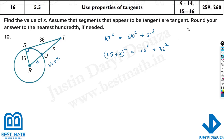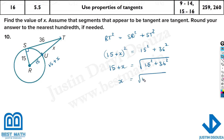Here we can use the A plus B whole squared rule to expand, but the easier way is to just take the square root on the other side: 15 plus x equals the square root of 15 squared plus 36 squared. Then we simplify in the calculator and subtract 15. So x equals the square root of 15 squared plus 36 squared, minus 15.